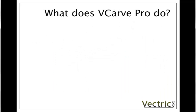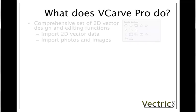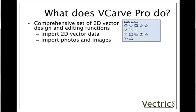From a technical point of view, VCarve Pro allows you to do a number of things. When you're designing, there's a comprehensive set of 2D vector drawing tools and editing functions, as well as the ability to import 2D vector data from other design programs. These could be a CAD program such as AutoCAD or TurboCAD, or a more drawing-oriented program like CorelDRAW or Adobe Illustrator, or one of many others. It also lets you import photos or images that you may have scanned or have on your computer, and to use those as a basis to help you create your vector design.